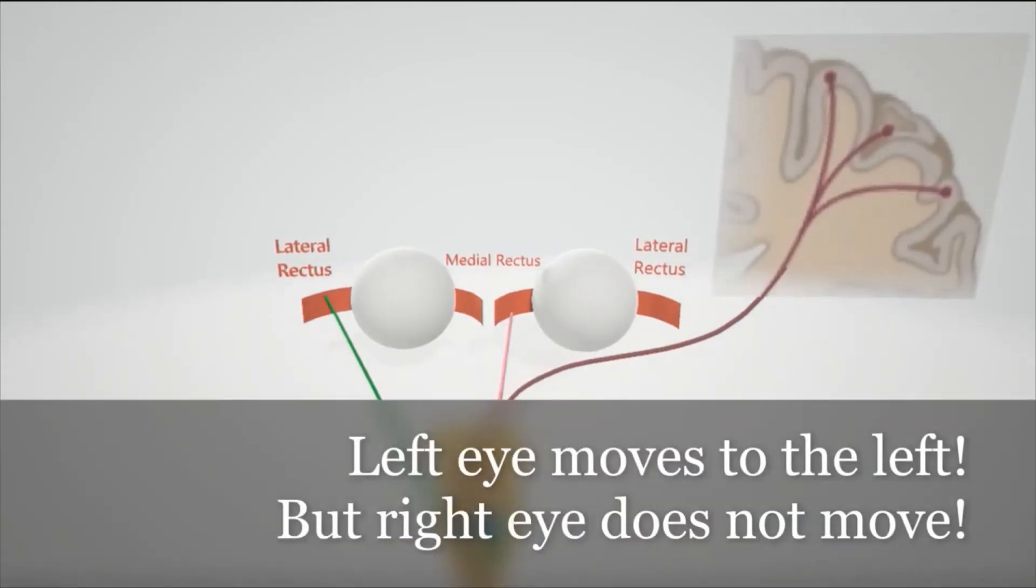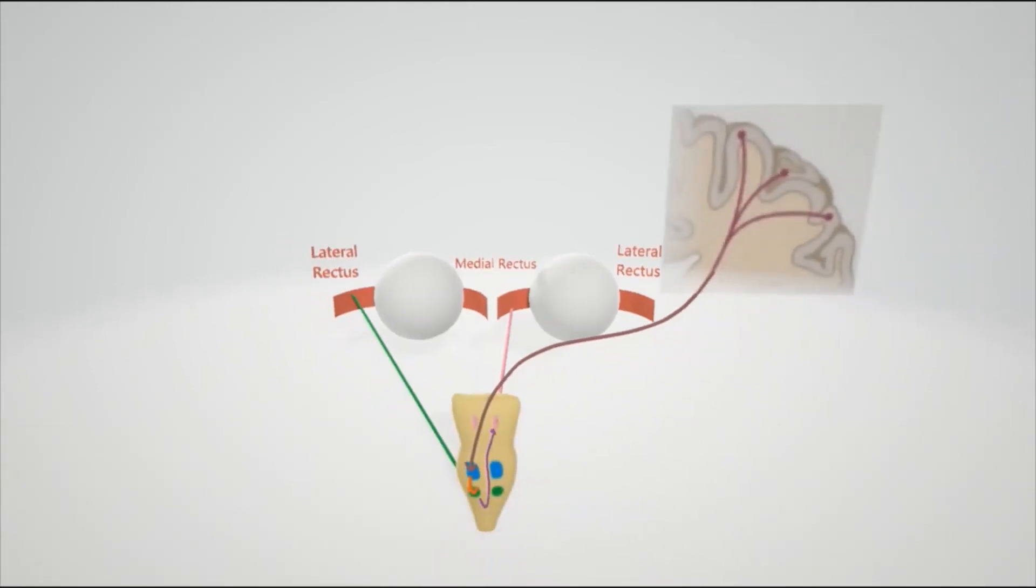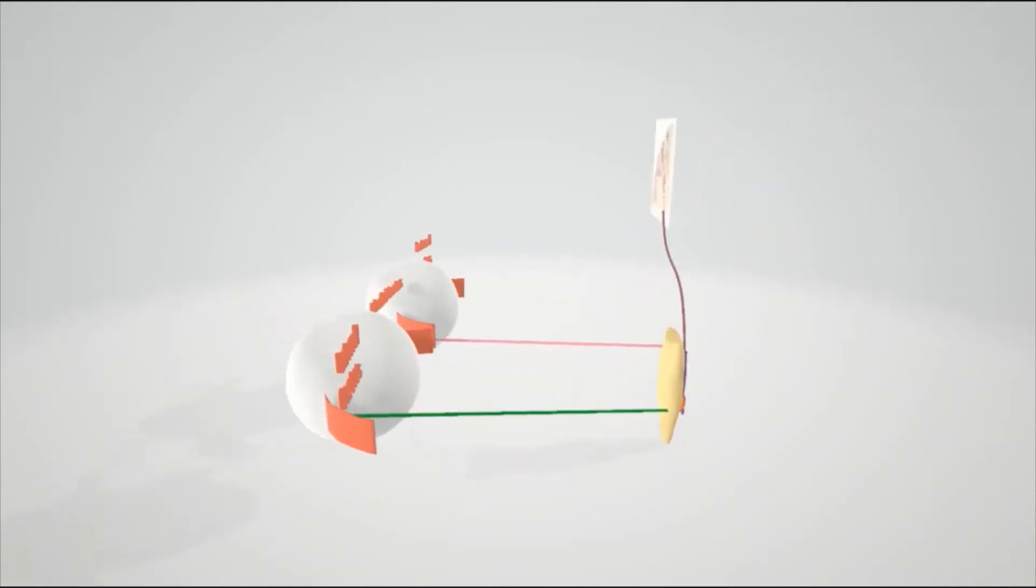Only the lateral rectus is going to contract. Therefore, the left eye is going to look to the left, whereas the right eye is not going to move at all. So that's what happens in internuclear ophthalmoplegia. Now just a few other associations in this disease. As we mentioned, it's associated with multiple sclerosis and strokes.